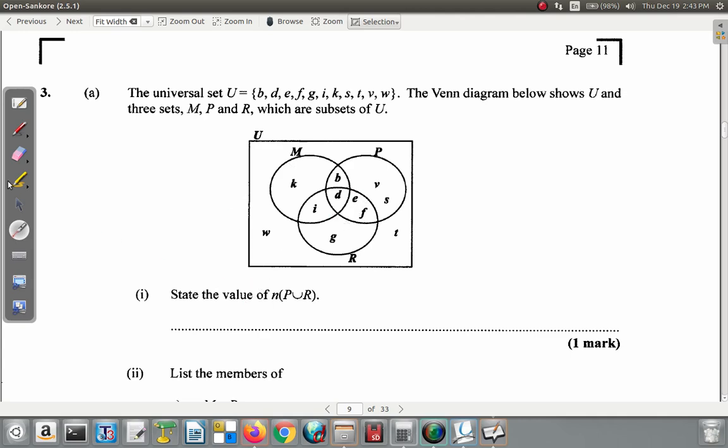Part (i) says state the value of n(P∪R). That means the number of elements in P union R. Remember, union means everything in both sets, whether it's in one set alone, the other set alone, or both.